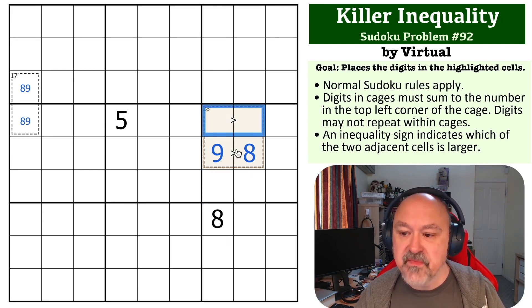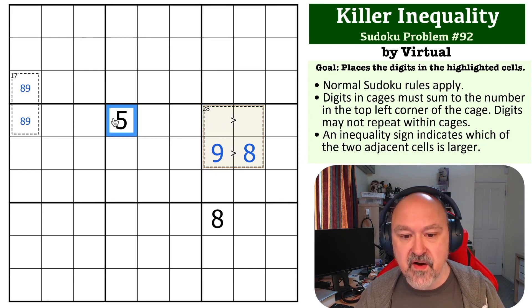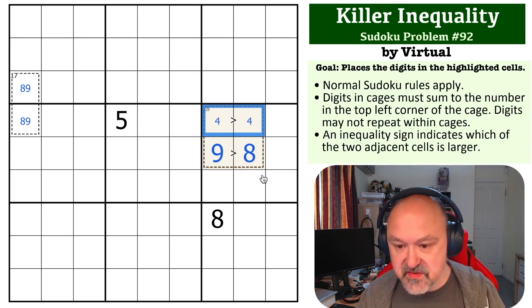Now we can look at this, and the only two options left to fill out the remaining 11 that we need to put in is 4, 7 or 5, 6. This 5 means that we can't use 5, 6, so this is 4, 7.